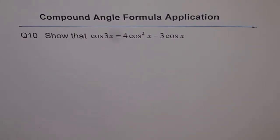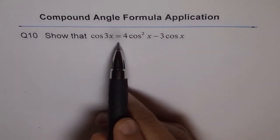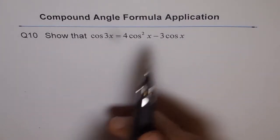Compound angle formula application. Question 10: Show that cos 3x equals 4 cos squared x minus 3 cos x.